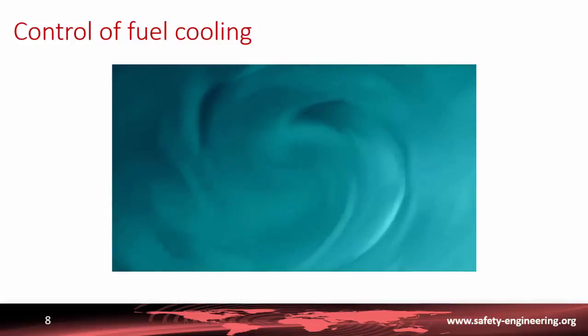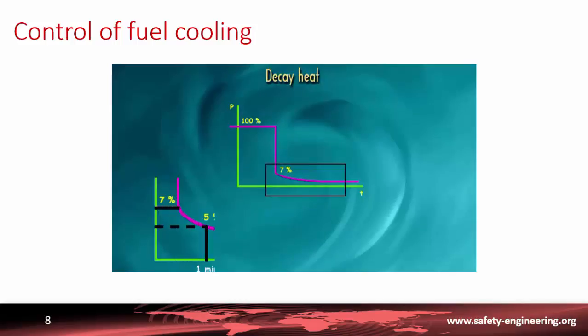But this does not completely solve the problem as what is referred to as decay heat or residual heat remains due to the radioactivity of the fission products. When the chain reaction is stopped, the power level rapidly drops to 7% of the operating level then drops more slowly. Thus the power level is around 7% immediately after shutdown, 5% after one minute, 1.5% after one hour.